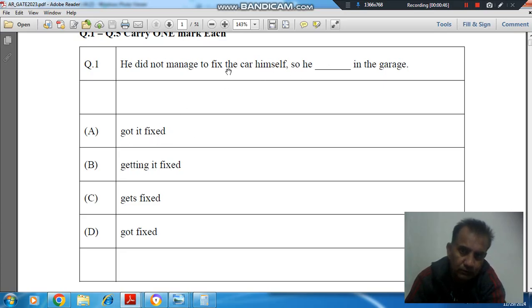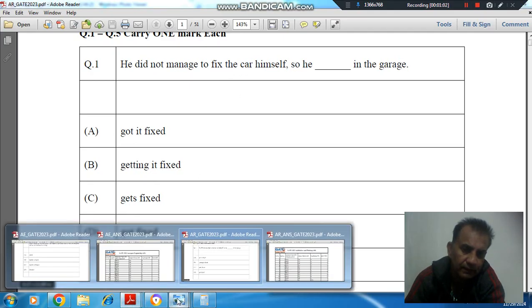should be used because he is talking about the car. So 'got it fixed' - option A is the answer. This is the answer. Got fixed, got it fixed - 'got it fixed' means car fixed, so the answer is option A.